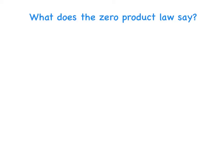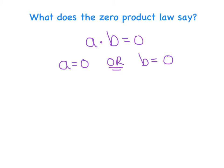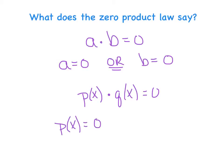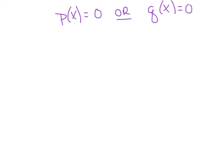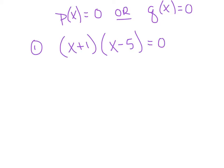Remember the zero product law: if a times b equals 0, then either a equals 0 or b equals 0, because 0 times anything equals 0. Today we extend that: if p(x) times q(x) equals 0, then either p(x) equals 0 or q(x) equals 0. For example, if (x plus 1)(x minus 5) equals 0, then either x equals negative 1 or x equals 5 — those are my zeros.